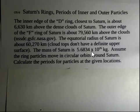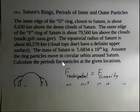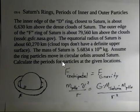The mass of Saturn is 5.6834 times 10 to the 26 kilograms. And we're going to treat the ring particles as if they're moving in circles. This is a good approximation. We're going to calculate the period for the particles for both of those locations.